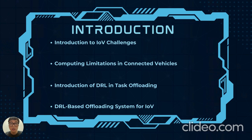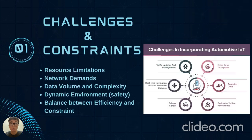The Internet of Vehicles faces resource challenges, prompting the use of deep reinforcement learning, also known as DRL, which adapts to check constraints, offering an innovative IOV task offloading solution. This paper introduces a specialized DRL system optimizing IOV operations, showcasing DRL's efficiency to transform connected vehicles.